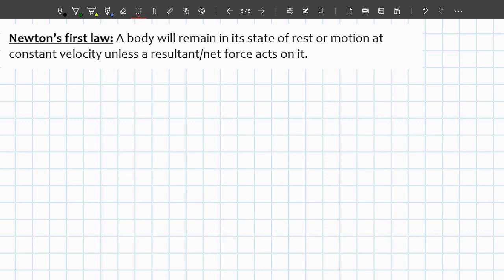For Newton's first law, it states that a body will remain at rest or motion at constant velocity unless a resultant force acts on it. So that's basically saying if an object is already moving and there's no force acting upon it, it will continue moving.